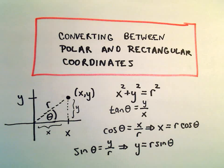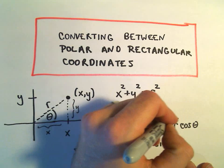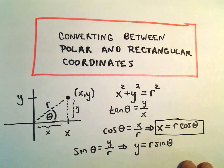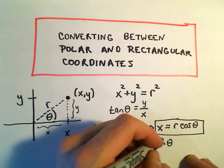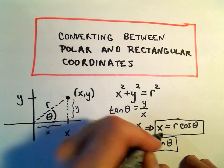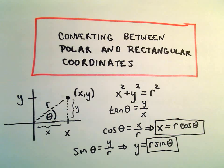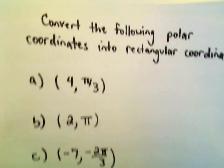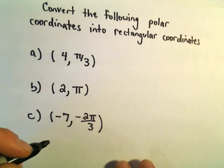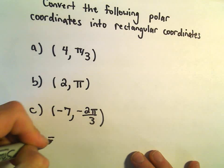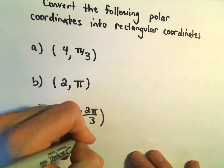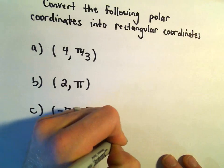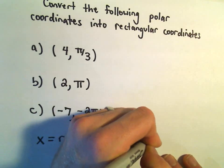A few more examples here of converting between polar and rectangular coordinates. We're going to go from polar to rectangular. When you convert from polar to rectangular coordinates, all you need to remember is that x is given by r cosine theta, and y is given by r sine theta. We've got three here to do pretty quickly.